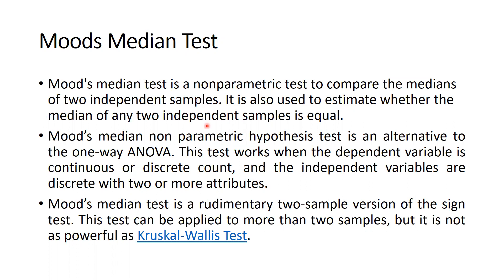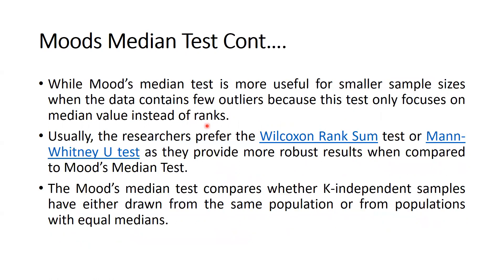Mood's Median Test is more useful for smaller sample sizes when the data contains few outliers, because this test only focuses on the median value instead of ranks. The drawback is that if your database has many outliers, the median may not give an unbiased or correct picture of the data.